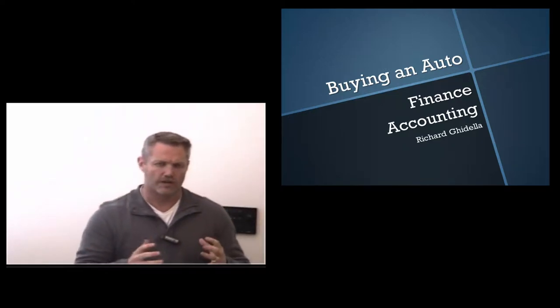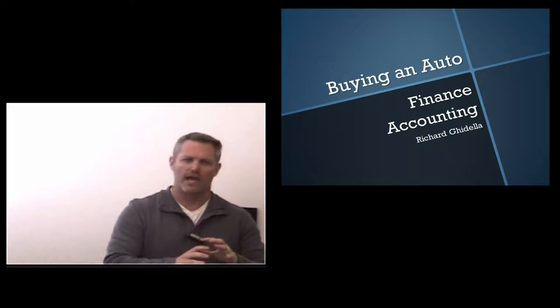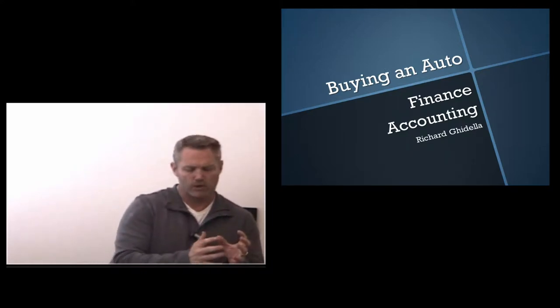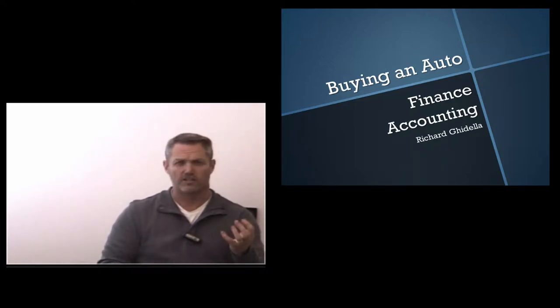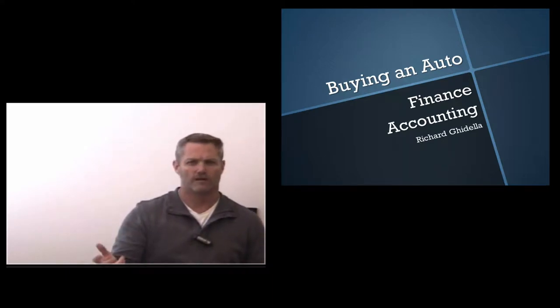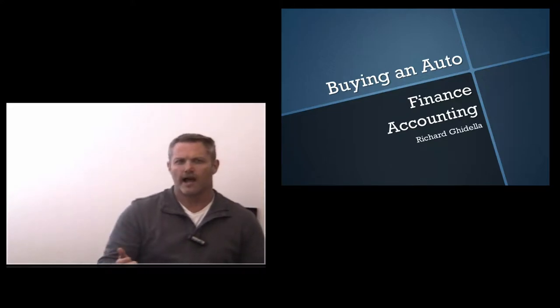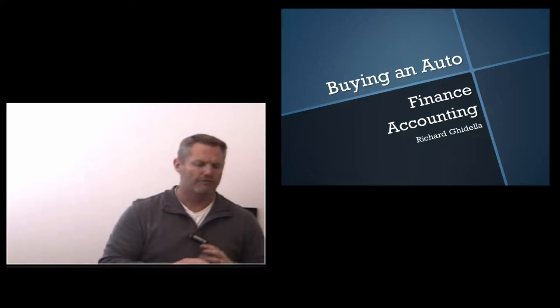Two big considerations when we're going through any purchasing process. One is how expensive the item is. Certainly, we're going to spend a lot of time on something that costs us $10,000 to make sure we make a good decision versus something that just costs a dollar. But even more important than that, what we want to look at is what is the cost of failure? How much does it cost us if we make a wrong decision? If there's very little cost to a wrong decision, then we're going to spend very little time on that item.